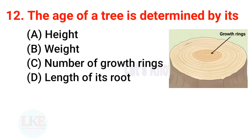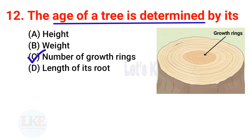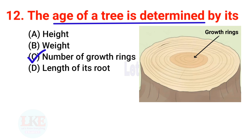Question number 12: the age of a tree is determined by its number of growth rings. The age of a tree can be determined by counting the growth rings — the number of rings indicates the number of years the tree has lived.